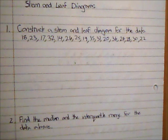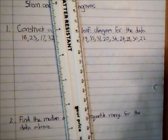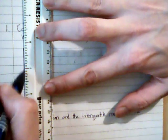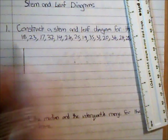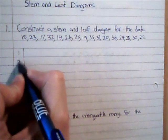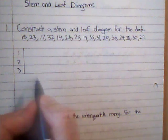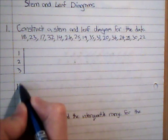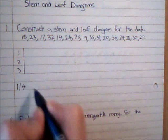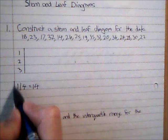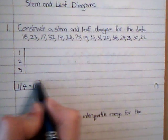So we've got a set of data here. All the data ranges from the tens to the thirties, so when I'm considering a stem it would seem very sensible that I use tens, so if I have tens and twenties and thirties. So I need a key to explain what that means, so I'm just going to do one with four is equal to fourteen. It doesn't really matter what I use, I just need some indication of what's what.